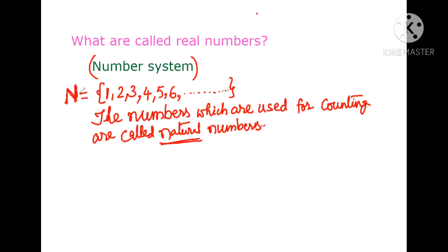First, what are called natural numbers? The numbers which are used for counting are called natural numbers. In our daily life we count currency, people, animals, things — so many books, pens, like that. We count by using these numbers. Without these numbers we cannot count articles or anything. So the set of all these numbers is denoted by the English capital letter N, which is the first letter of natural numbers.